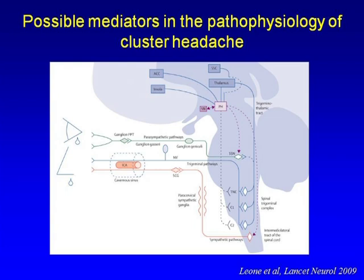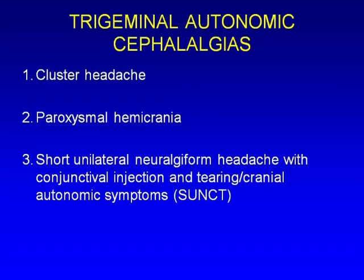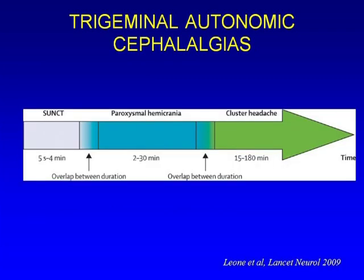When discussing cluster headache, we always include the trigeminal autonomic cephalalgias — a group of rare headache conditions involving autonomic features. The three main types are cluster headache, paroxysmal hemicrania, and SUNCT. The key difference between these is attack duration: SUNCT attacks last five seconds to four minutes with up to 200 attacks per day; paroxysmal hemicrania has 8 to 40 attacks per day; cluster headache usually has one to three attacks, most often occurring at night.